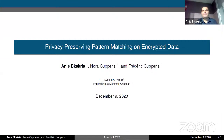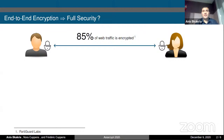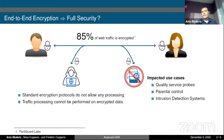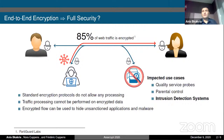Thanks for the introduction. I'm going to start my presentation with a very quick motivation. This year, we estimate the total percentage of encrypted web traffic to be around 85 percent. As you all know, end-to-end encryption ensures the confidentiality of the exchanged data. However, it does not allow any processing of the encrypted data, which impacts several use cases, including intrusion detection. In 2020, more than 70% of malware campaigns are encrypting attacks to bypass intrusion detection systems. The main challenge we are working on in this paper is how to perform pattern matching on end-to-end encryption.